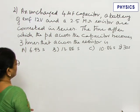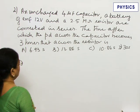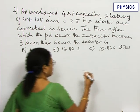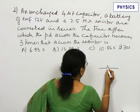The time after which the PD across the capacitor becomes 3 times that across the resistor. This is based on RC circuit and charging of a capacitor.